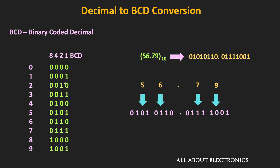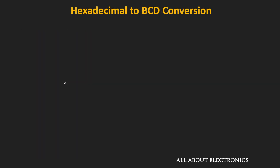That is how we can convert any decimal number into the equivalent BCD code. In general, if we want to find the BCD equivalent code of any number given in the base B number system, then first we can find the equivalent decimal number and then do the decimal to BCD conversion. So that is how we can convert any number into the equivalent BCD code.